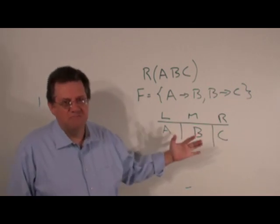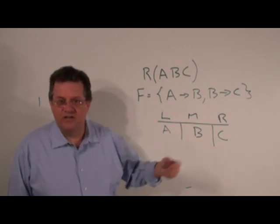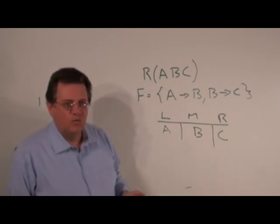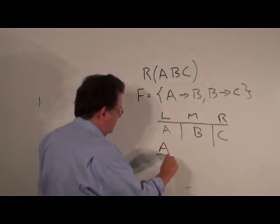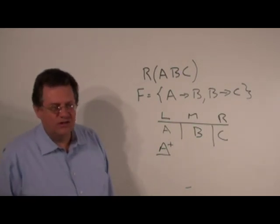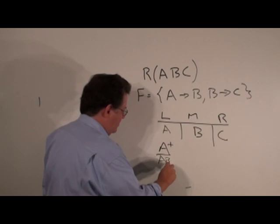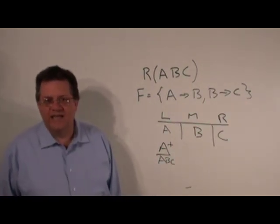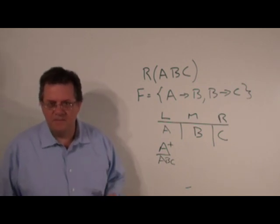So if we figure the closure of A, we get A, B, C — which includes all the attributes of R. So we would know A is a key.